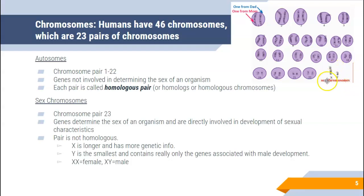The very last set are the sex chromosomes — that's pair number 23. Their only job is to help develop the structures related to what sex you are. If you have X and Y, you're male; if you're X and X, you're female. Both males and females have an X chromosome and there's actually a lot of info on the X chromosome that both genders need. The Y chromosome is very small and is only involved with making male characteristics. Pair 23 is not considered homologous because X and Y are very different things — the sex chromosomes are the only pair that isn't homologous.